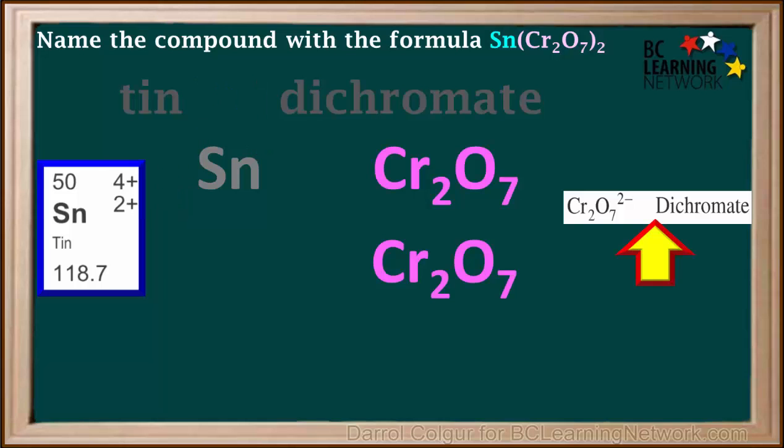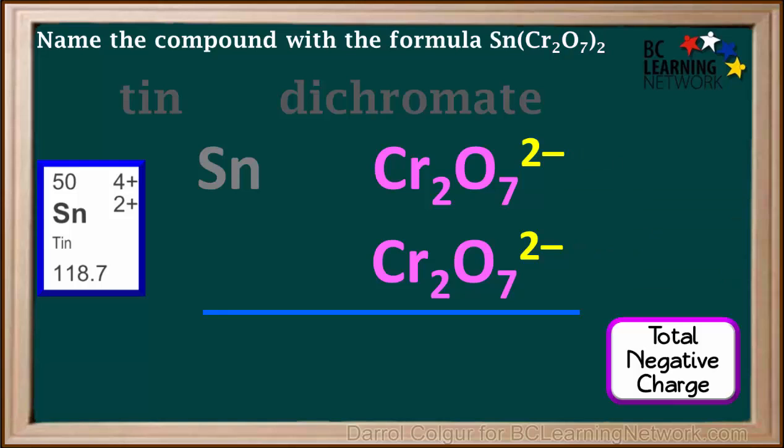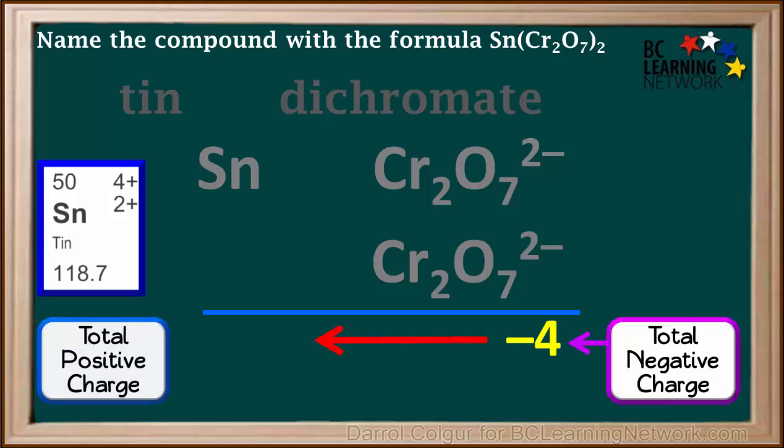The ion table tells us that each dichromate ion has a charge of negative 2. So the total negative charge is negative 2 plus negative 2, which is negative 4. The charges must be balanced. So the total positive charge is positive 4.